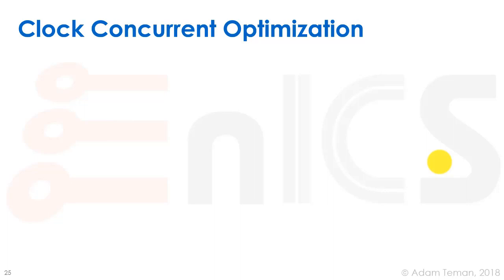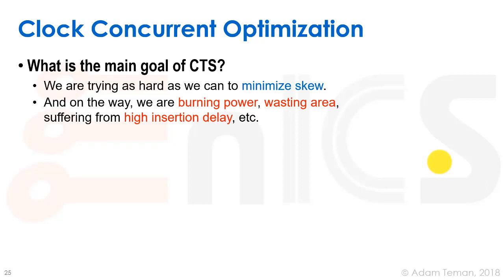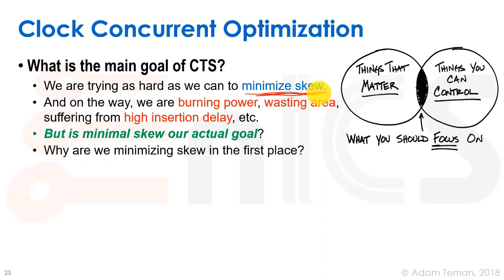Let me introduce something else. What is the main goal of clock tree synthesis? We're trying as hard as we can to minimize skew — that's what all the previous slides were about. But we're burning power, wasting area, and suffering high insertion delay. Is minimum skew actually our goal? Why are we minimizing skew in the first place?